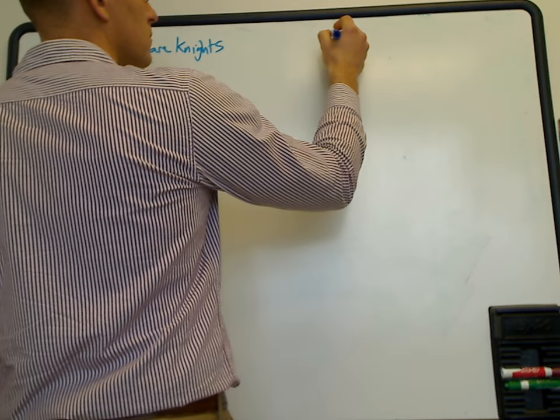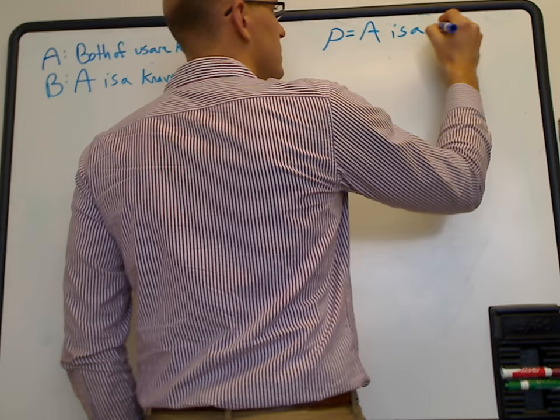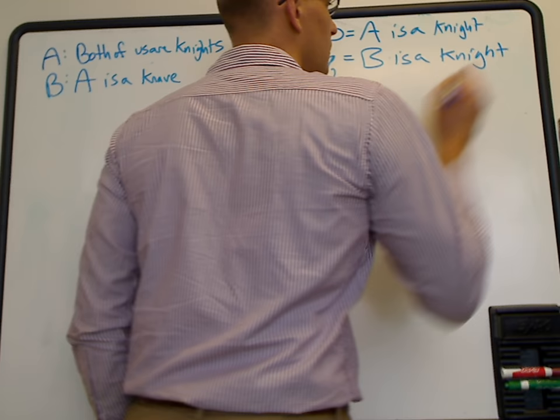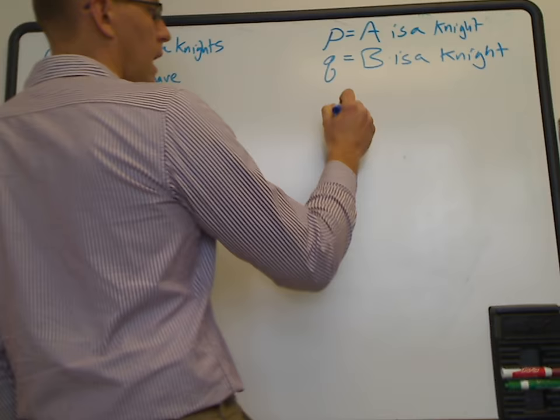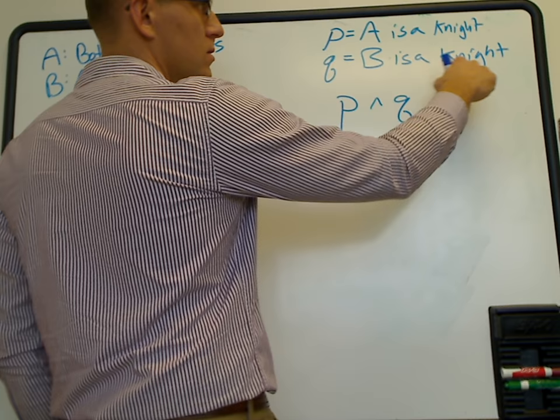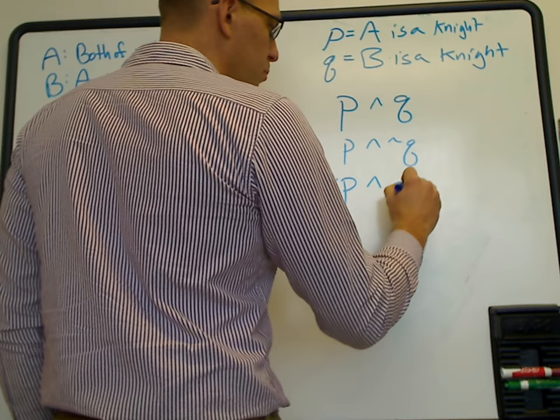Let's say we have a variable P, which represents the case that A is a Knight. We really have four cases here that could happen: A is a Knight and B is a Knight; A is a Knight and B is a Knave (so not-Q is true); A is a Knave and B is a Knight; or they're both Knaves.